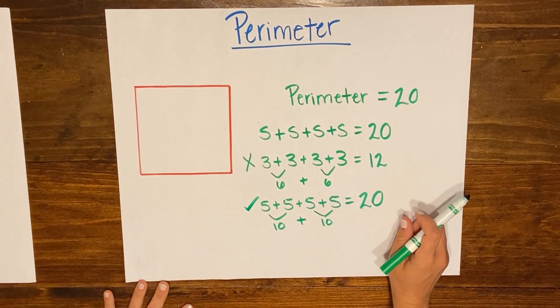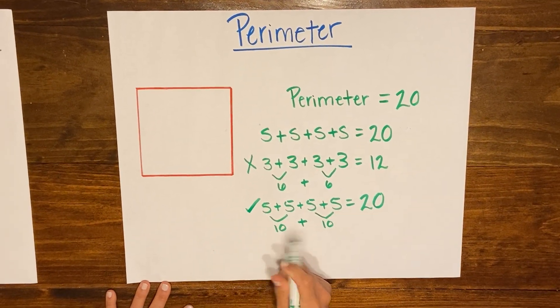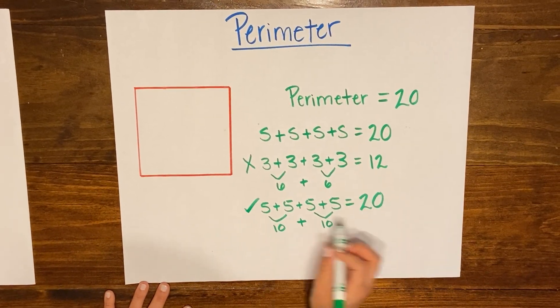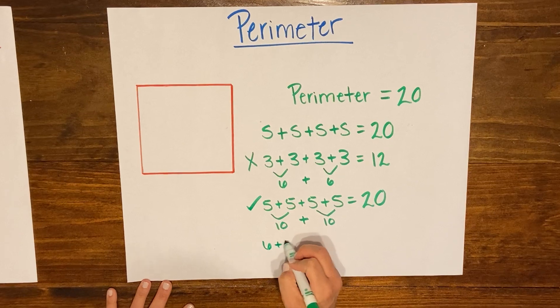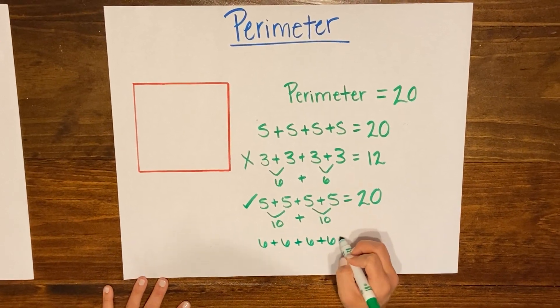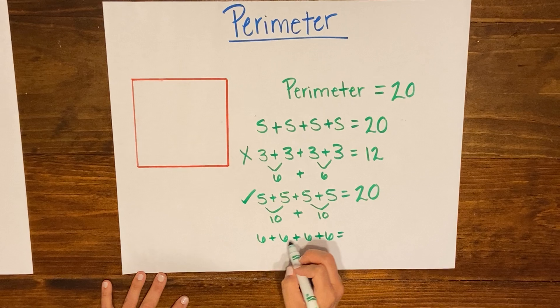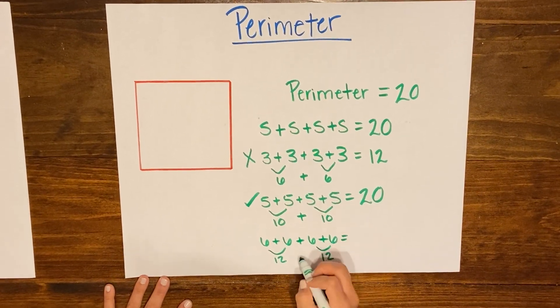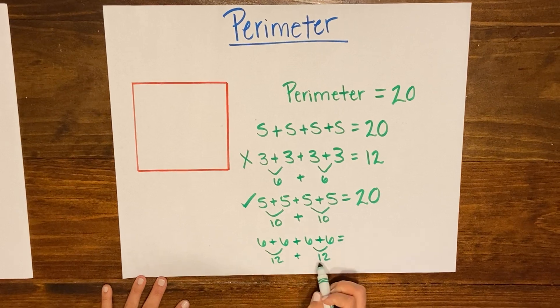Okay and just to kind of show you that this is the only set of numbers that would work I'm just gonna try 6 plus 6 plus 6 plus 6 just so you can kind of see what happens. I know 6 plus 6 is 12, 6 plus 6 is 12 and I can see that 12 plus 12...